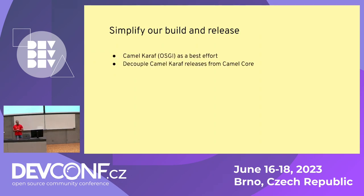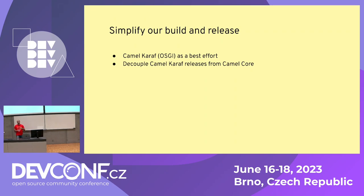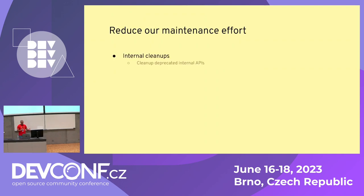Looking at our work in maintaining Camel and what we did with Camel 3 — things that worked well, things that gave us some additional effort — we identified Camel Karaf, which is one of our subprojects, as one of the pain points in our ecosystem. So we decided with Camel 3 to downgrade the effort on maintaining this subproject to best effort. In practice, this means we will decouple the releases of Camel Karaf from the releases of Camel Core, so when we release a new version of Camel Core, there won't necessarily be a new version of Camel Karaf.